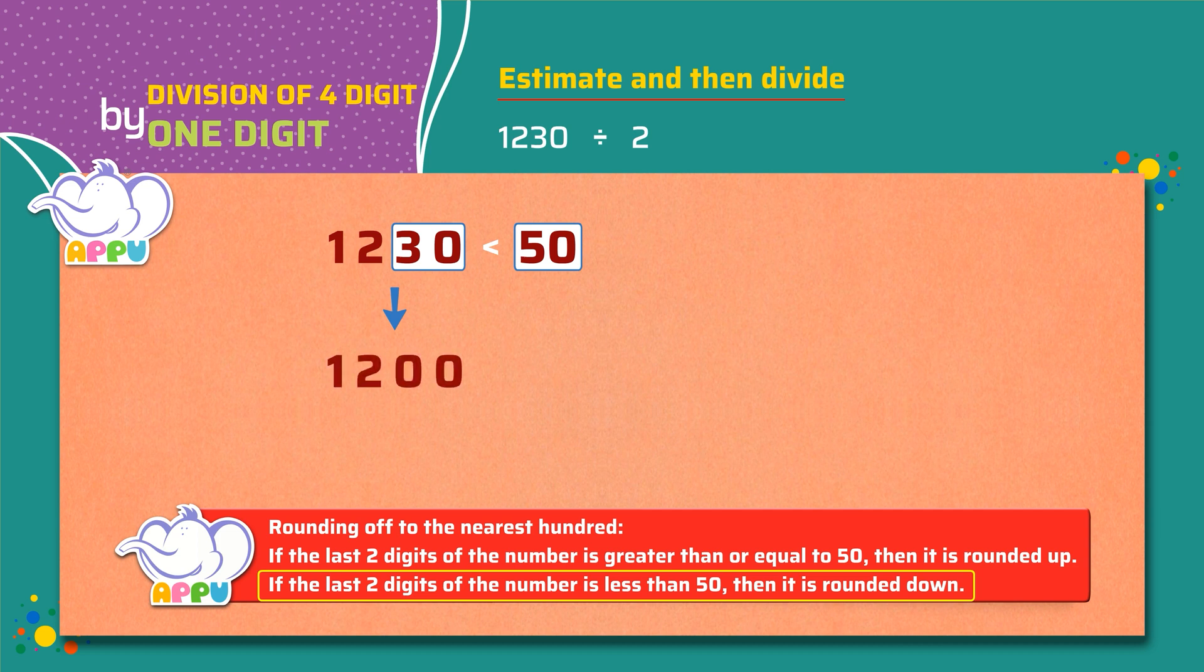So we divide 1200 by 2. We write the division bracket and write 2 outside the bracket and 1200 inside the bracket.